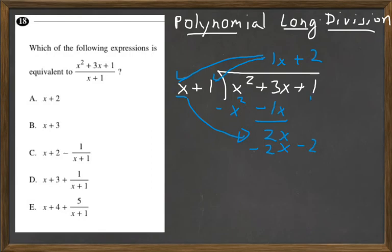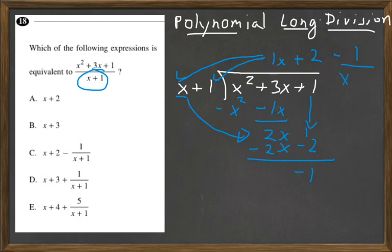I forgot to bring this 1 down here. So what is 1 minus 2? That's negative 1, and that's our remainder. Our remainder ends up being minus 1 over x plus 1, since we still have that x plus 1 that we didn't cancel out. So the solution is going to be C: x plus 2 minus 1 over x plus 1.